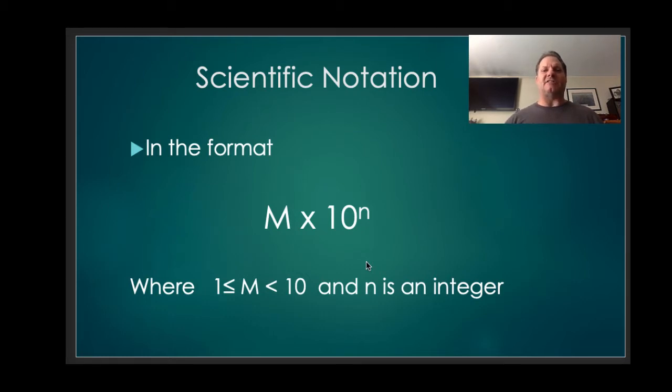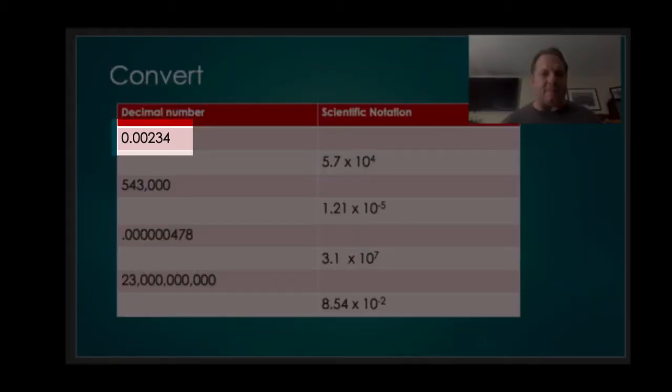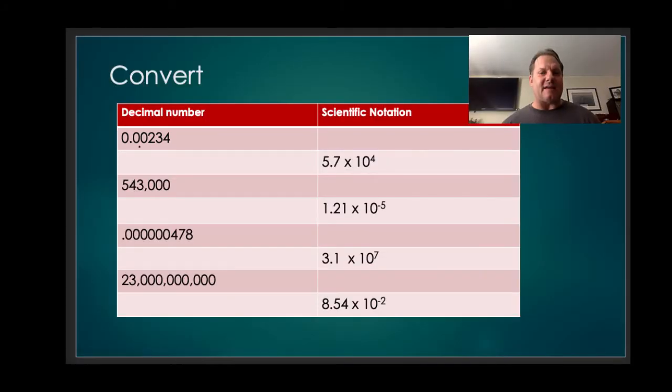So what scientific notation allows us to do is talk about really big numbers, really small numbers, or help clarify what numbers are significant and what numbers aren't. When we look at taking decimals and turning them into scientific notation, we're going to look at turning this number here into a number between 1 and 10 by sliding the decimal point.